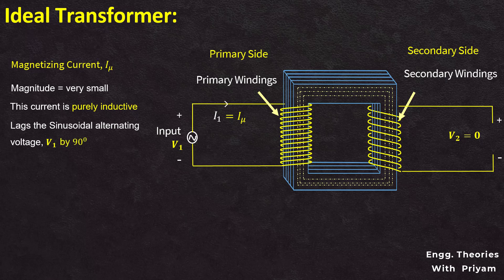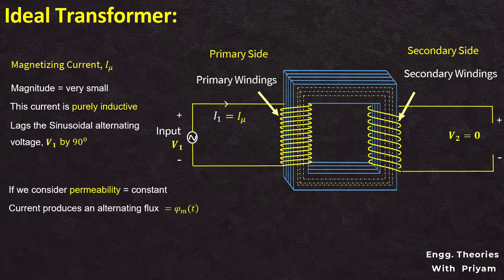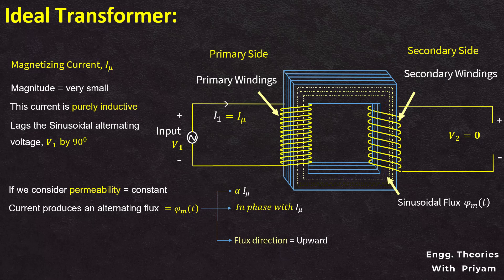If we consider the permeability to be constant, then this current produces an alternating flux phi_mt, which is proportional to the current and in phase with the current. Using the right-hand rule, the direction of the flux can be determined to be in the upward direction. The alternating flux phi_mt is linked by both the primary and secondary windings.